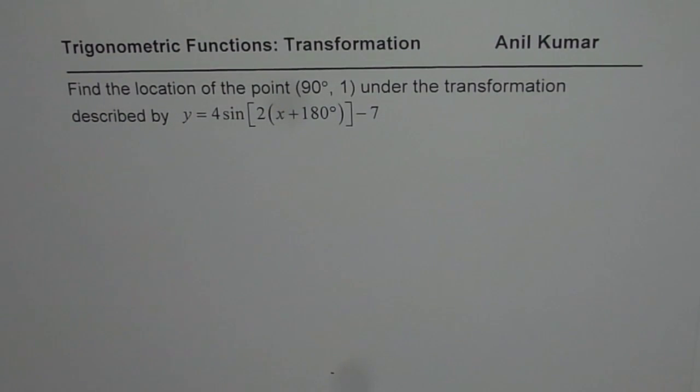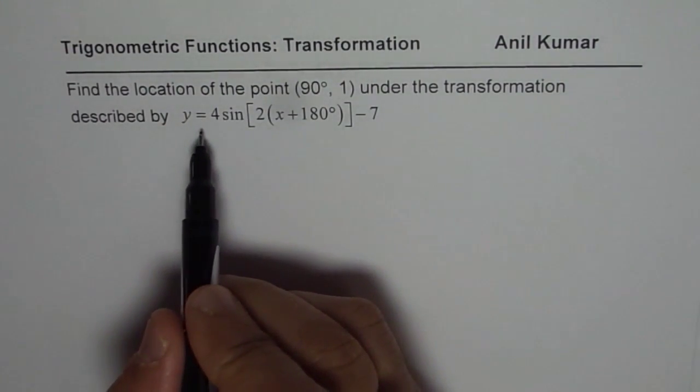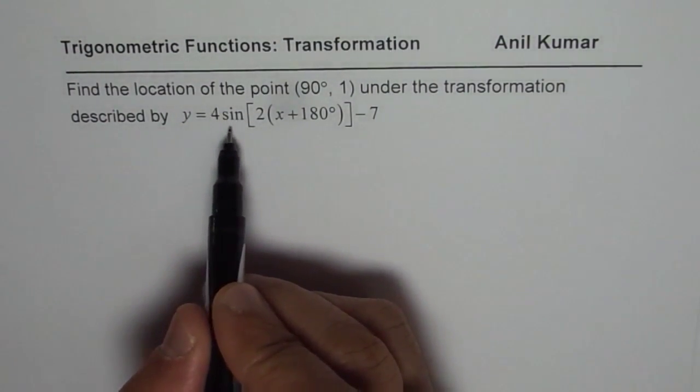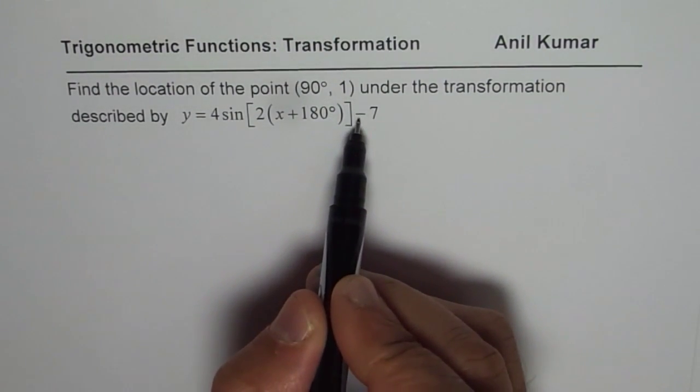I am Anil Kumar and here is a very interesting transformation question on trigonometric functions. Find the location of the point (90°, 1) under the transformation described by y = 4sin[2(x + 180°)] - 7.